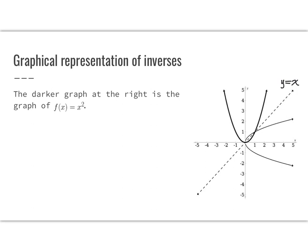If you use the process for finding the inverse, you would say x = y², and you'd solve for y, so you'd have y = ±√x. That is what is being graphed here. The square root of x is this upper part, and the negative square root of x is that lower part. So be aware of that graphical relationship between a function and its inverse.